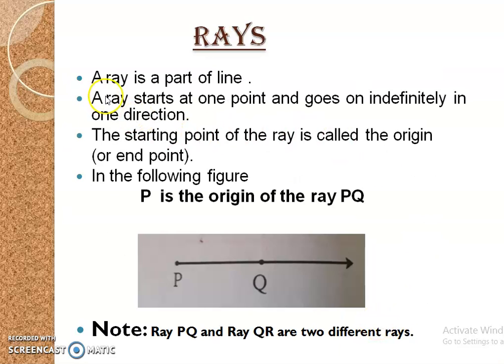Rays: A ray is a part of a line. A ray starts at one point and goes indefinitely in one direction. The starting point of the ray is called the origin or end point. See the figure. In this figure, P is the origin of the ray PQ. Note, ray PQ and ray QP are two different rays.